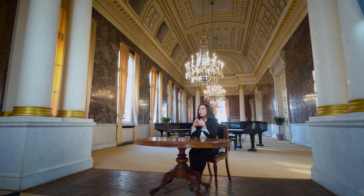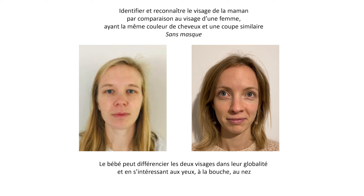Plusieurs études ont constaté qu'au cours des premiers jours et surtout des premières semaines, le bébé manifeste la préférence pour le visage de sa mère par rapport au visage d'une personne étrangère. On peut par exemple lui présenter deux visages, soit en réalité, soit sur vidéo — celui de sa mère et celui d'une personne étrangère présentant la même couleur de cheveux et une coupe similaire, mais dont le visage reste neutre, qui ne bouge pas et ne parle pas. Les jeunes nourrissons regardent plus longtemps leur mère que la personne étrangère, ce qui témoigne de l'émergence de la reconnaissance du visage familier de la mère.